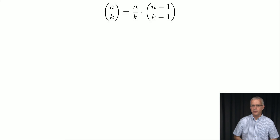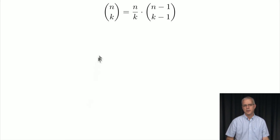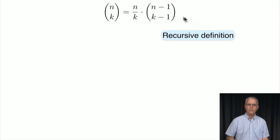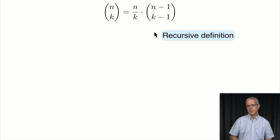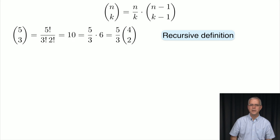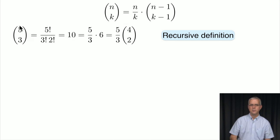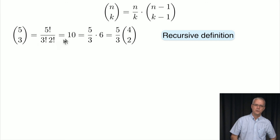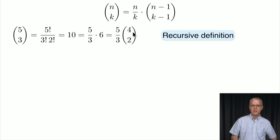Another identity: n choose k equals (n/k) times (n minus 1 choose k minus 1). This gives a recursive way of defining binomial coefficients, which can be useful when calculating large values without computing full factorials. For example, 5 choose 3 is 5!/3!2! = 10, which equals 5/3 times 4 choose 2 = 5/3 times 6 = 10. We can see an example of this equality.